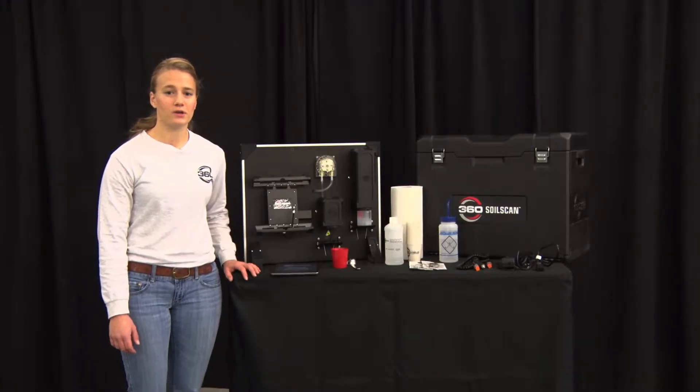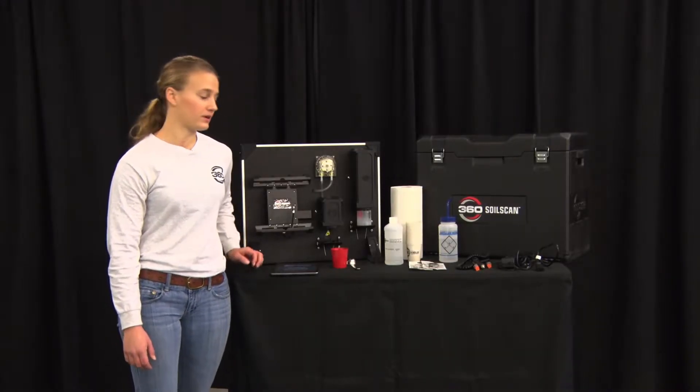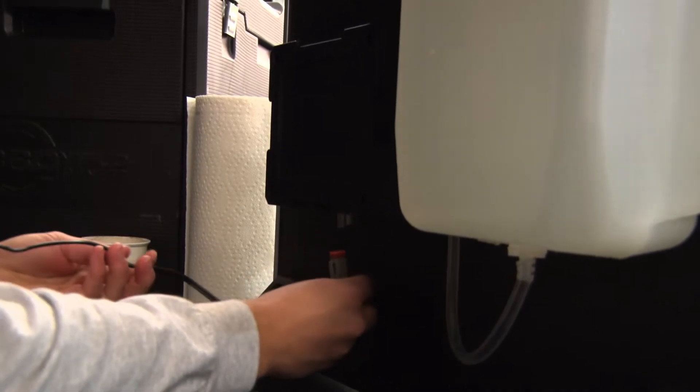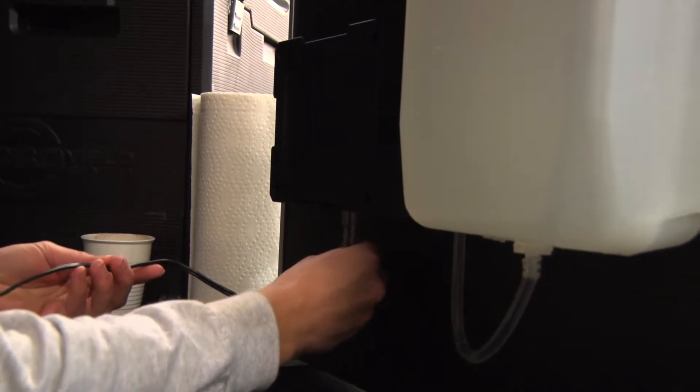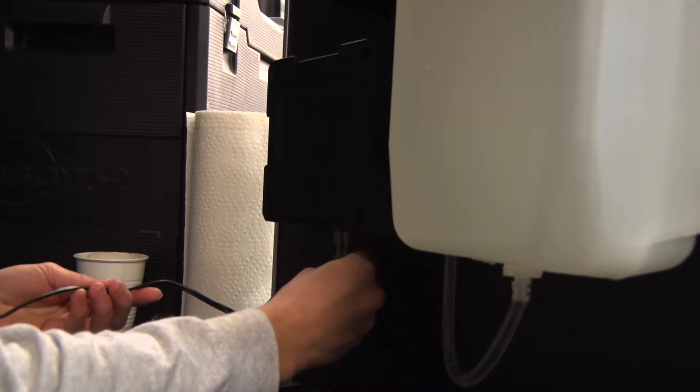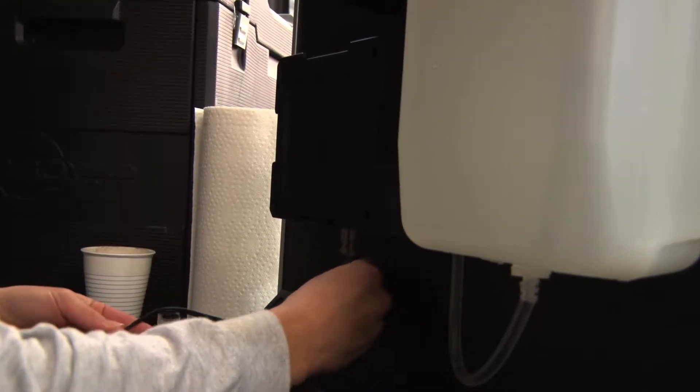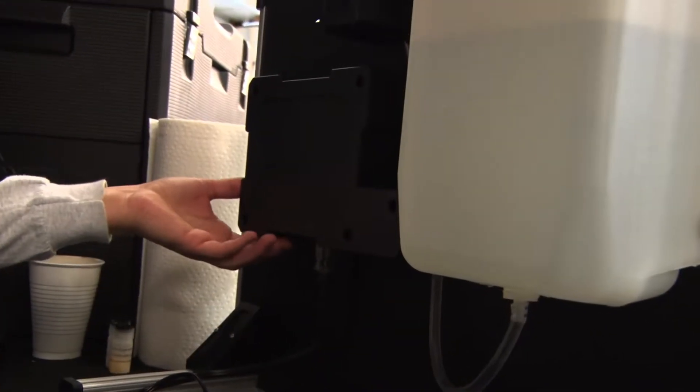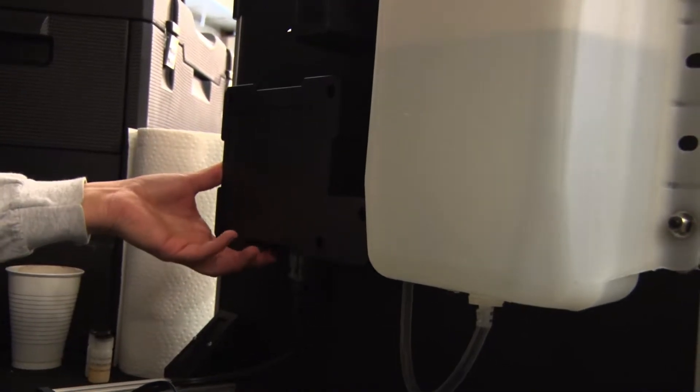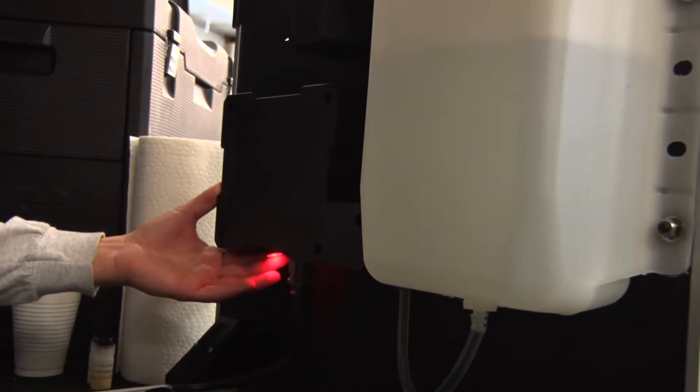While the sensors are soaking we're going to go ahead and apply power to the SoilScan. I'm going to use a wall plug-in to apply power. Remember that you also can use a cigarette lighter in a vehicle. To turn on the SoilScan flip the switch beside the plug-in. It will illuminate red when on.